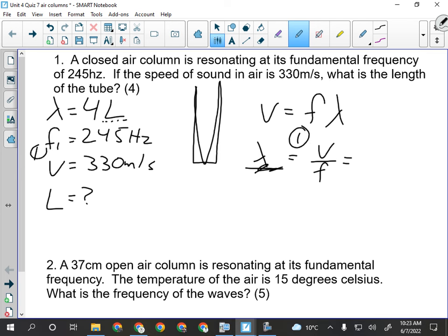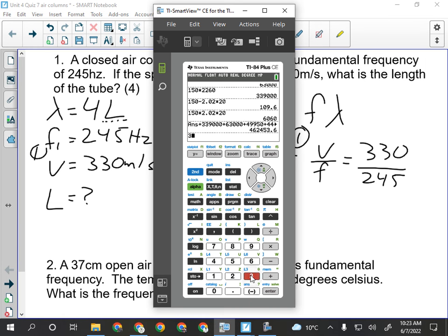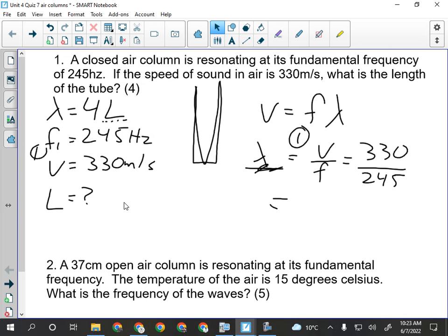And we are looking at 330 divided by 245. Okay, so our wavelength is 1.346. We'll keep all the decimals in the calculator. We'll just write 1.35 meters for now.